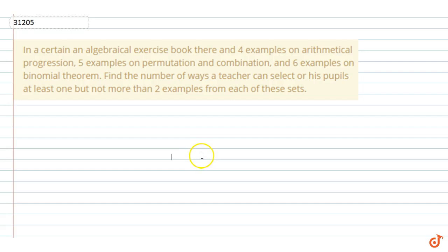So if we look carefully at the arithmetic progression book, there are four examples. Let's see the number of ways a teacher can select examples from arithmetic progression. We are given that at least one but not more than two must be selected.